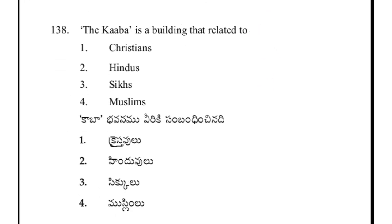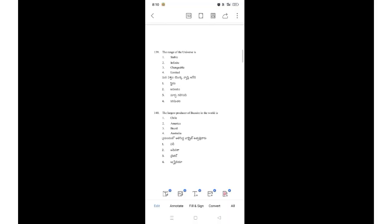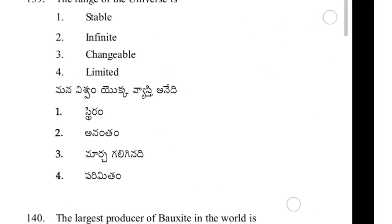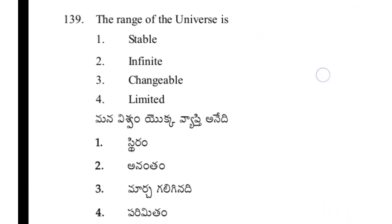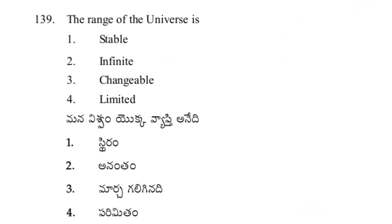The Kaaba is related to Muslims. The age of the universe is 2 infinity — option 2.